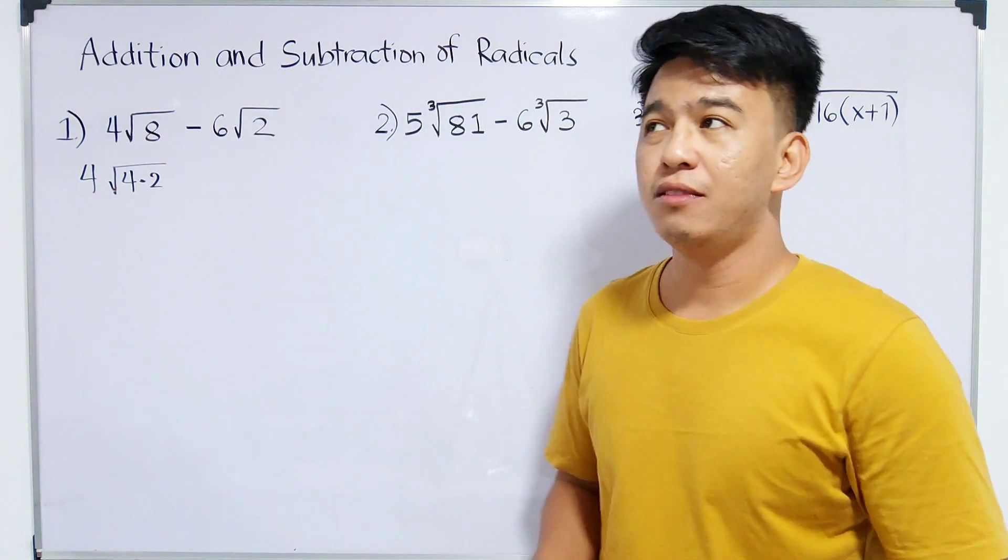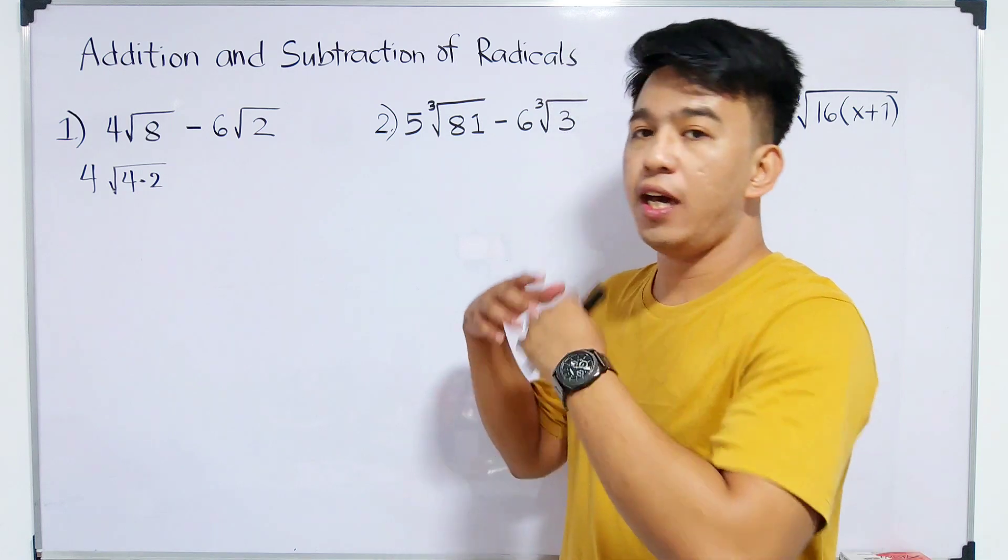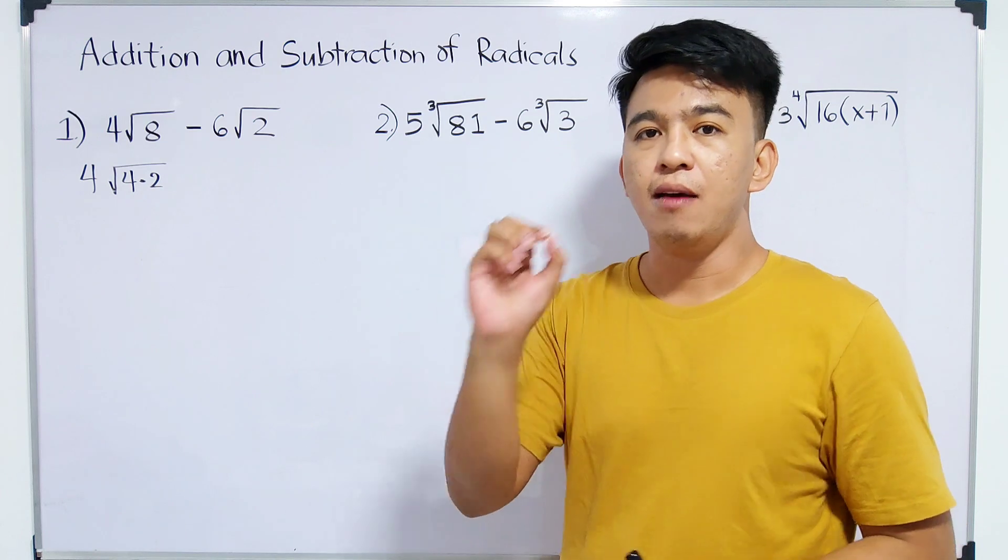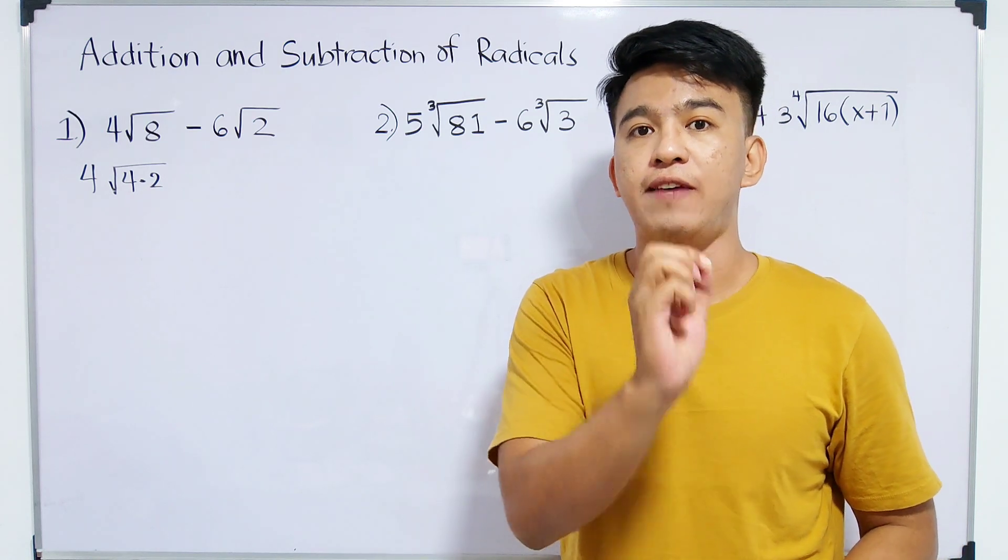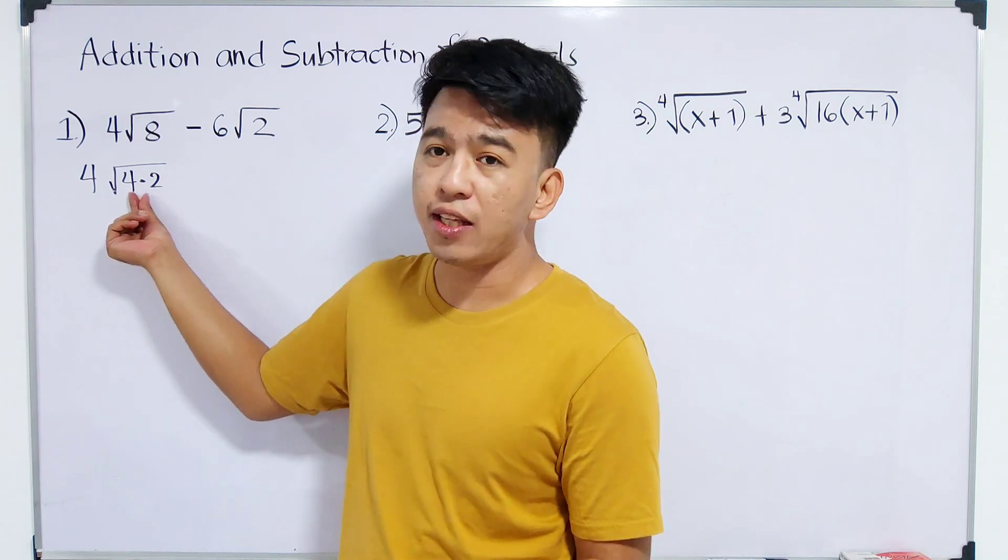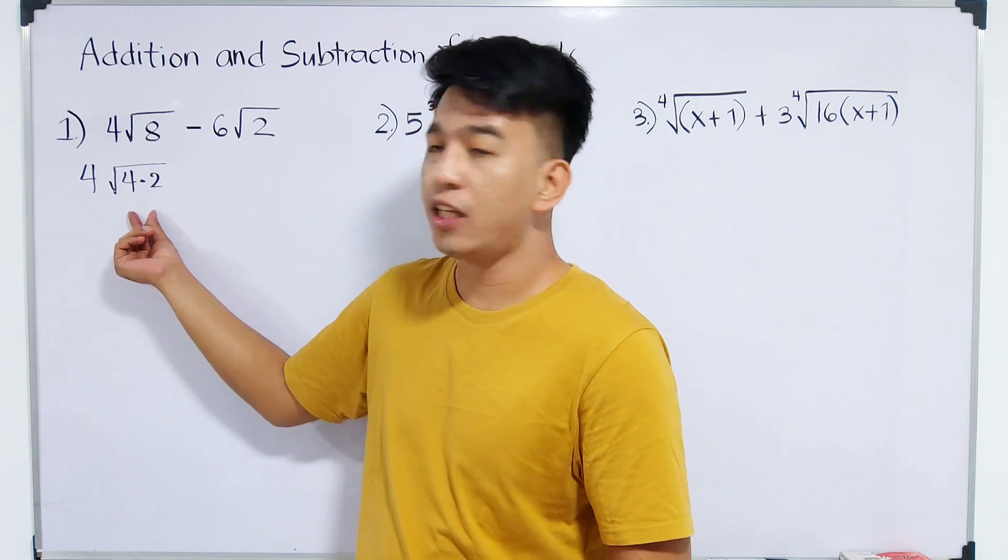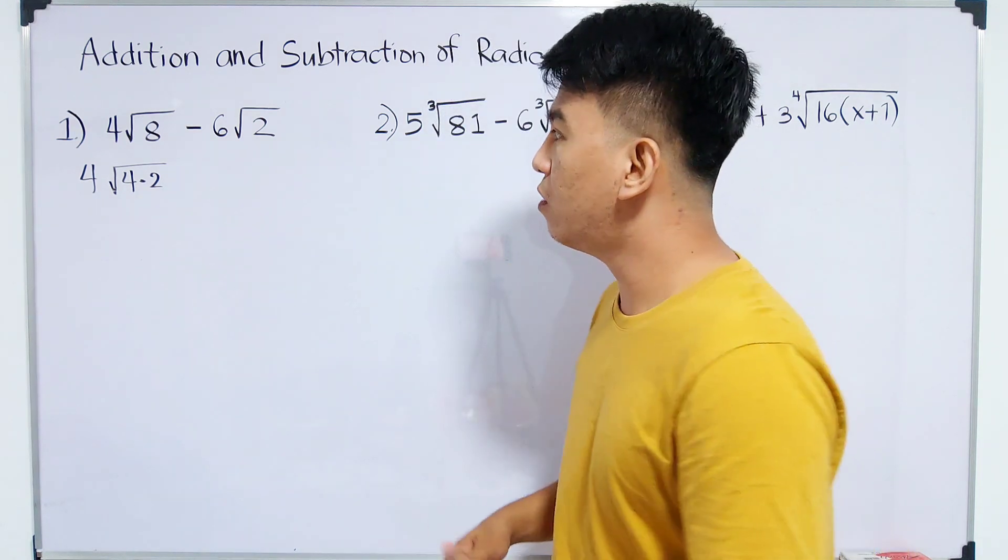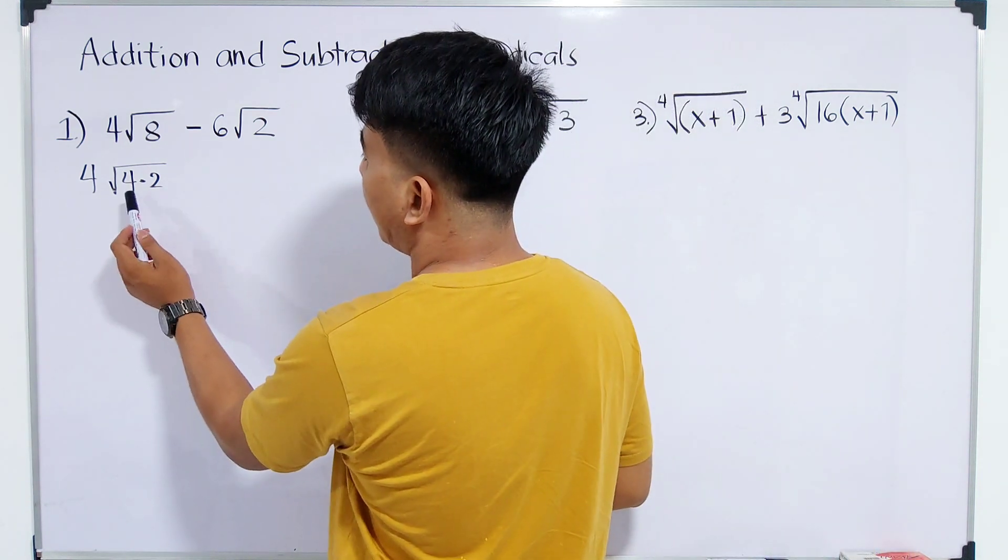So why did we choose 4 times 2? There are different factors of 8. We can use 8 times 1. I chose 4 times 2 because it has one perfect square factor. If you extract the square root of 4, it will come out and become a whole number. What remains is the square root of 2. So this is the correct factor to use.